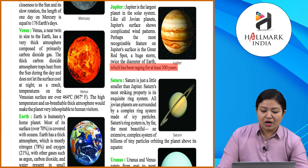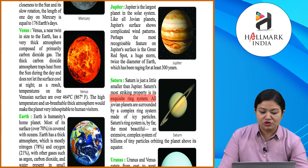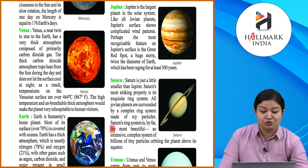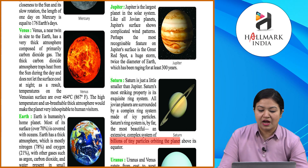Saturn is just a little smaller than Jupiter. Saturn's most striking property is its ring system. All Jovian planets are surrounded by a complex ring system made of icy particles. Saturn's ring system is by far the most beautiful and extensive — a complex system of billions of tiny particles orbiting the planet above its equator.